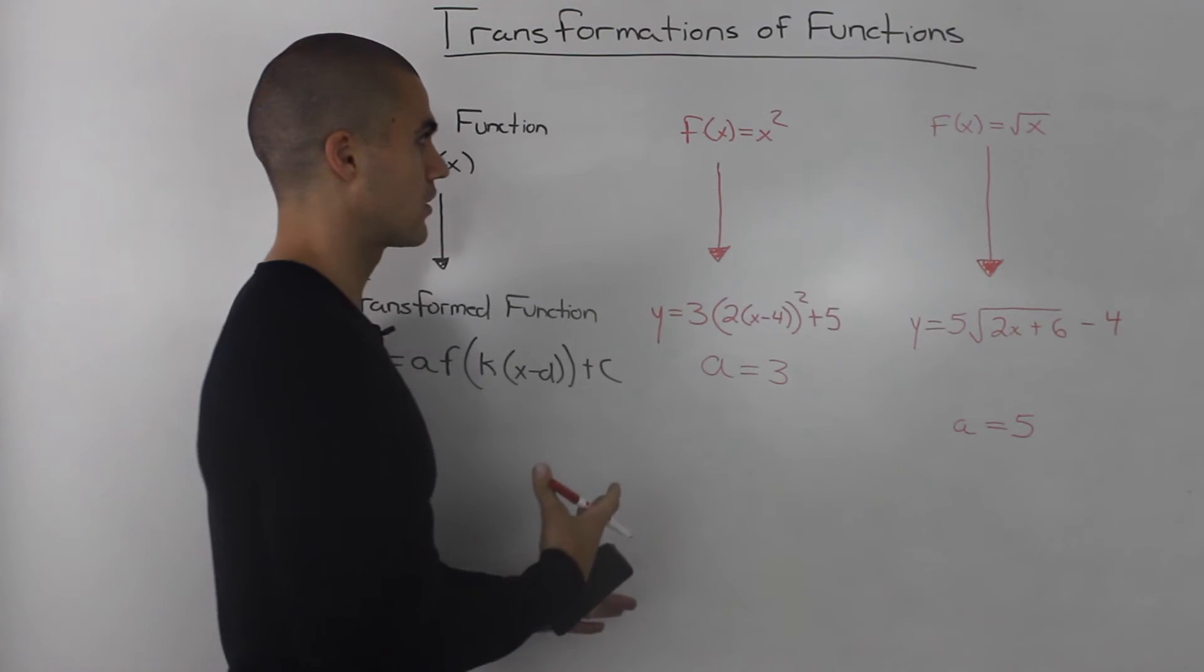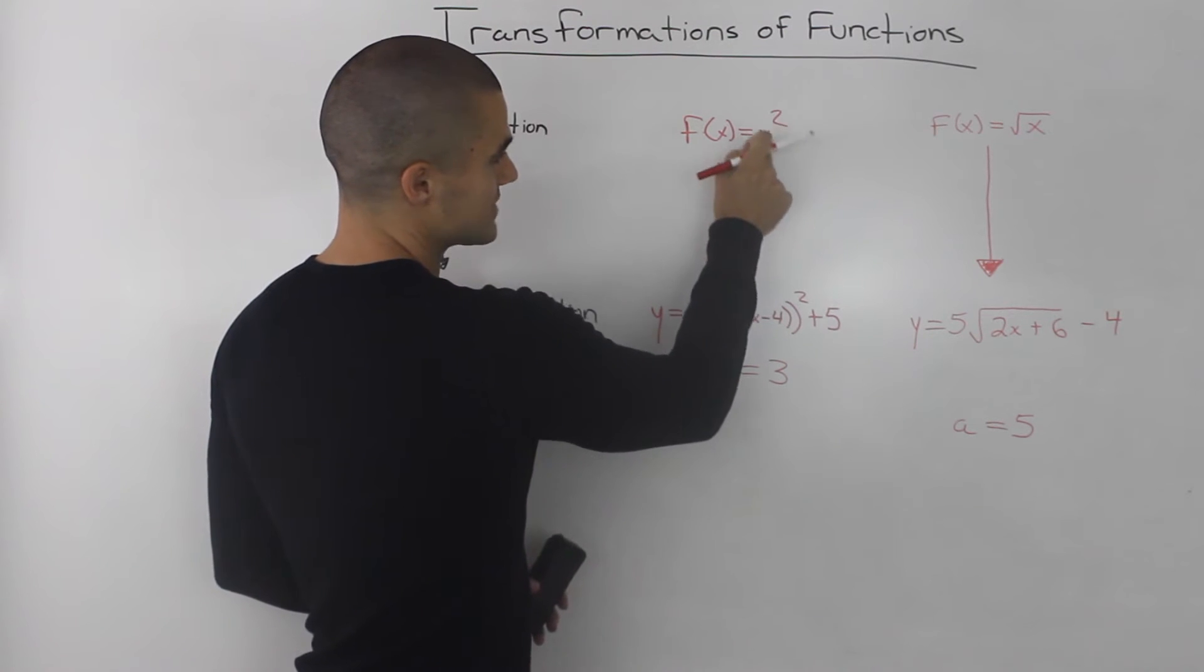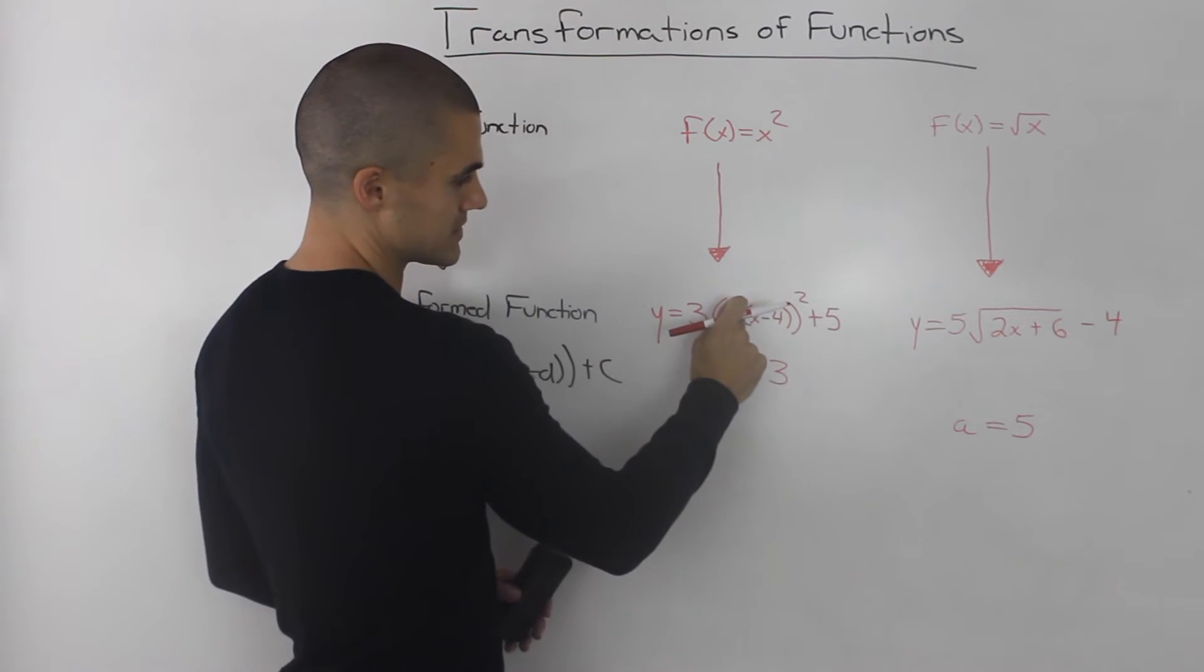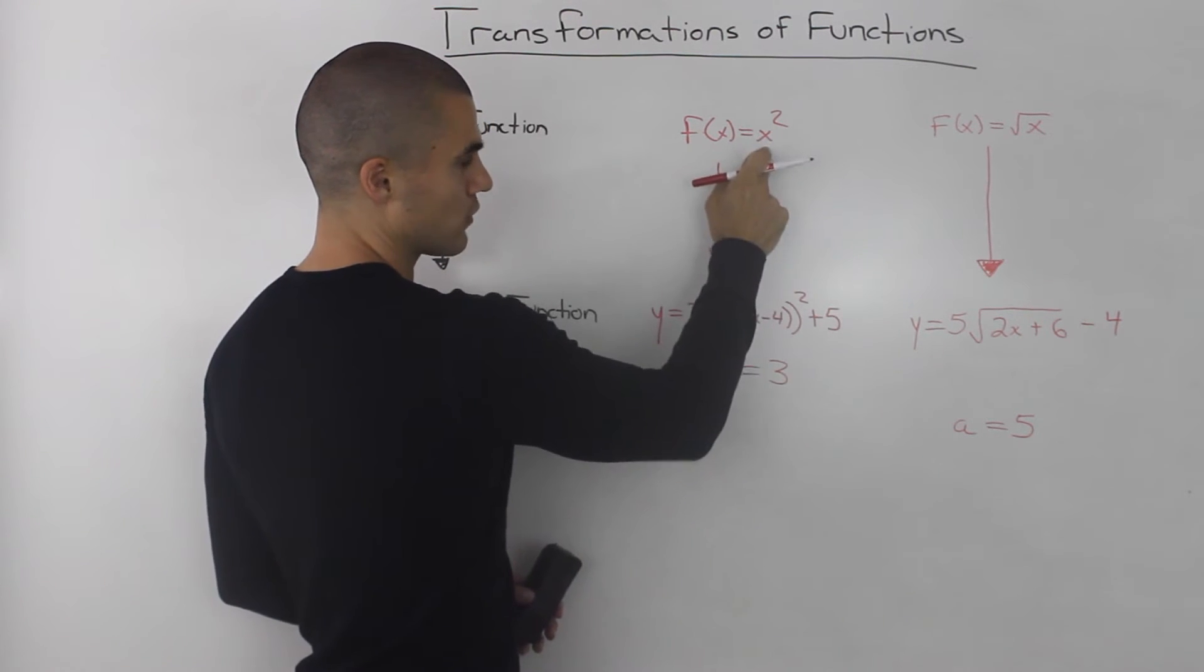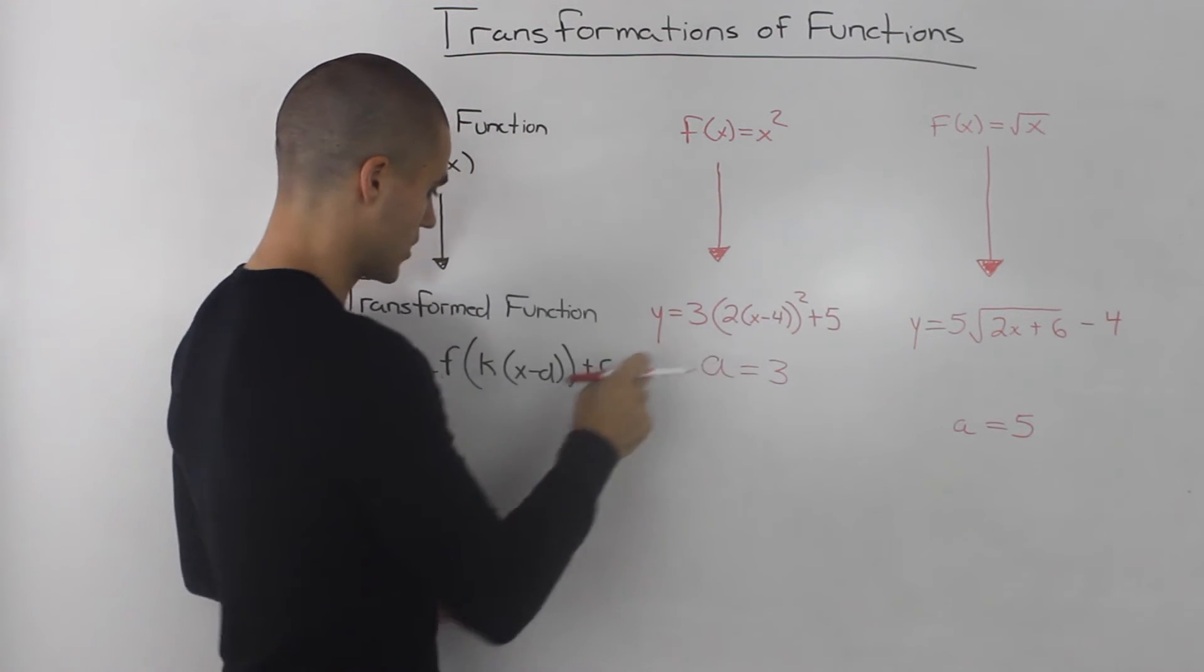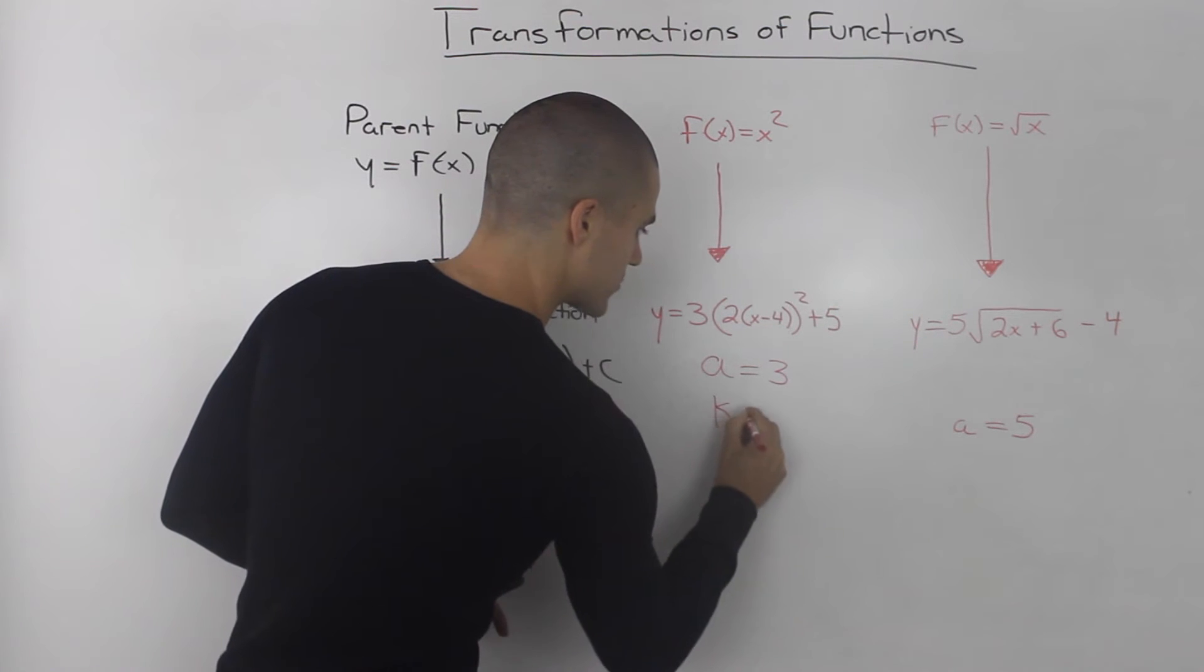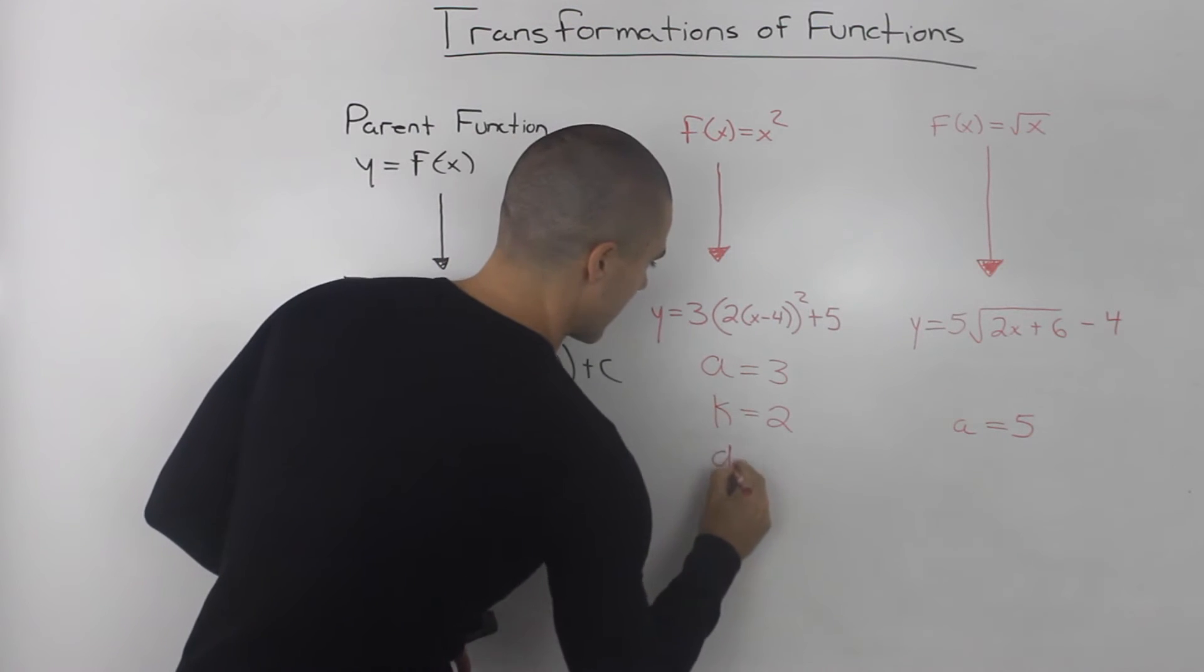So if we go to our specific example, notice how for the x value in x², we're subbing in this big bracket 2(x-4), right, because this 2(x-4) is being squared. So we took that and subbed it in for the x value. So this 2(x-4) corresponds to this k(x-d) portion. So notice how the 2 represents the k value and the 4 represents the d value.